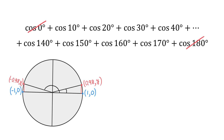We can also say that for the angle of 170 degrees, the reference angle is 10 degrees, and because cosine in quadrant 2 is negative, then cosine of 170 degrees is the same as negative cosine of 10 degrees. Then we can say that cosine of 10 degrees and cosine of 170 degrees will cancel each other.